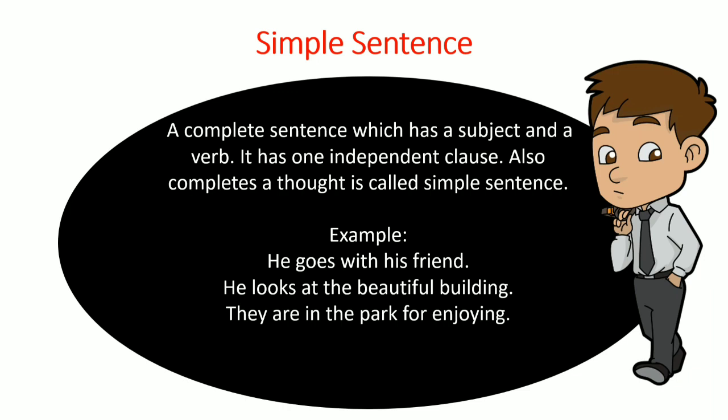'They' is the subject and 'enjoying' is the verb. In between, whatever is written — 'they are in the park, where they are enjoying' — it makes a complete sentence. It has an independent clause. Next: 'We open the door.' Although this sentence is quite short, it still makes sense and has a subject and a verb. 'We' is the subject, 'open' is the verb, and we are opening a door — so it shares a complete meaning.